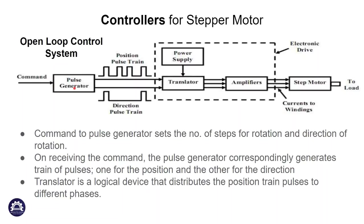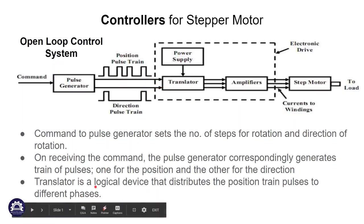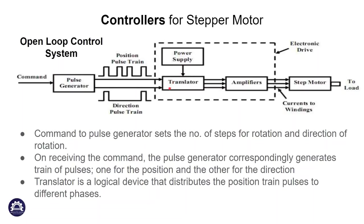The function of the pulse generator produces a pulse train. The pulse train is a signal that determines direction and position. The translator is a logical device that receives the pulse train and produces a logical sequence for the driver. The block includes power supply, translator, and pulse train feeding the stepper motor.